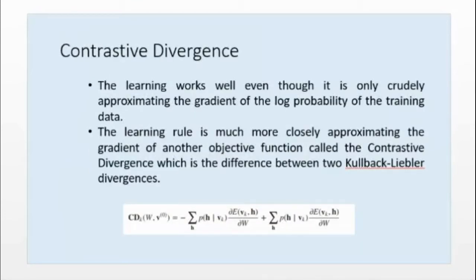So here, the learning works well, even though it is only purely approximating the gradient of the log probability of the training data. And what happens, it is not like you are using back propagation, gradient descent, but it is somehow KL divergence, difference between two KL divergence. So the difference is given by this formula, CD means contrastive divergence. Contrastive divergence is given by this formula. So from initial stage, for each iteration, you have to calculate this formula, this value.